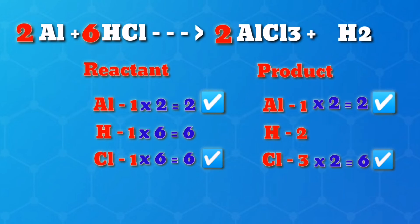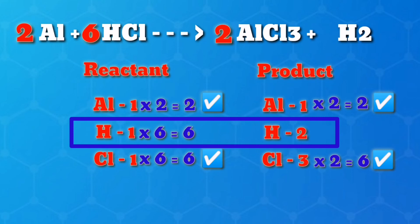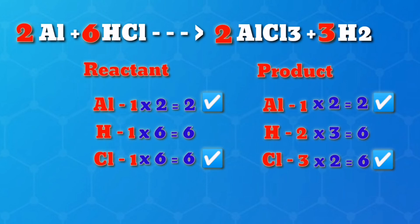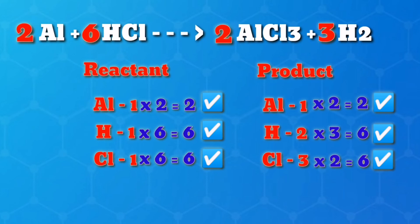We are not quite done yet. Looking over the equation one final time, we see that hydrogen has also been unbalanced — there are six on the left but two on the right. So, with one final adjustment, we get our final answer: 2Al + 6HCl → 2AlCl3 + 3H2.